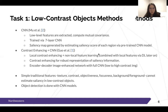In another method proposed by Guil et al., also using convolutional neural networks, contrast enhancement is added unlike the method of Mu et al. It has local contrast enhancing which allows robust representation of saliency information, as well as non-local feature learning that is combined with local features via a deep learning model. They used the CNN model to enhance the low contrast image into a high contrast one. This shows that simple traditional features like texture and contrast are not enough to estimate saliency in low contrast objects.